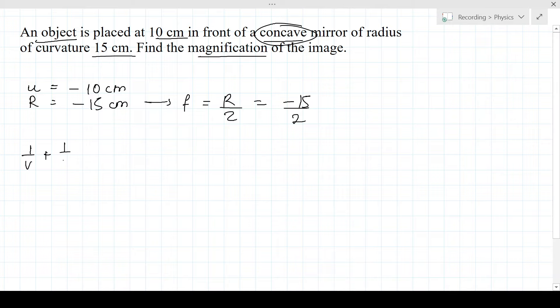1 by V plus 1 by U is equal to 1 by F. That gives us 1 by V plus 1 by minus 10 is equal to 2 by minus 15.